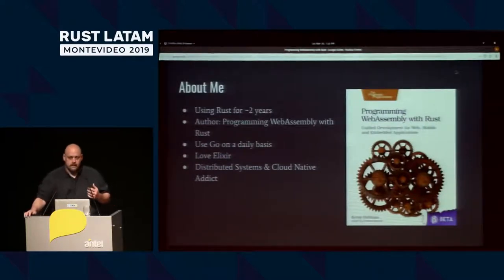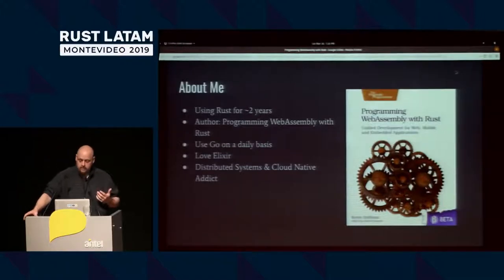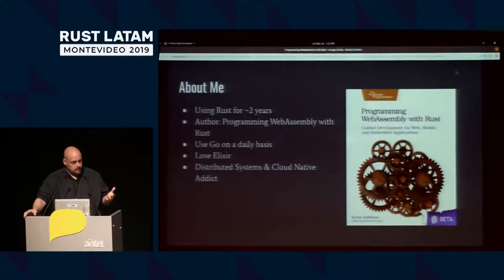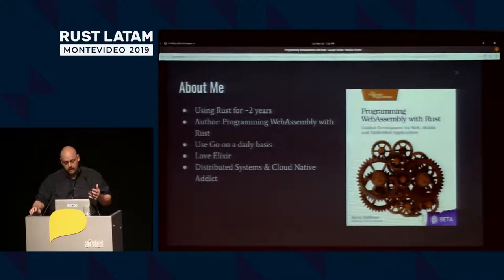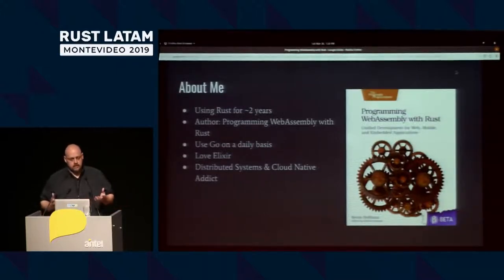I've been using Rust for about two years, off and on. I just recently finished a WebAssembly book that uses Rust. My day job is pretty much all Go. I'm a huge Elixir fan, and I will take a few seconds just to troll the previous presenter about OTP having less than 10 microseconds cold start time.